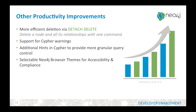We've also added other developer productivity improvements, such as the ability to do detach-delete, which deletes both nodes as well as all their relationships, improved Cypher warnings, additional hints in Cypher allowing you to more granularly control your queries, and selectable browser themes in the Neo4j browser that improve both accessibility and compliance.